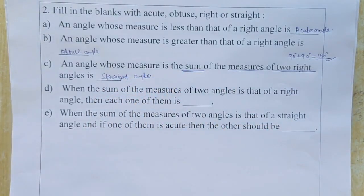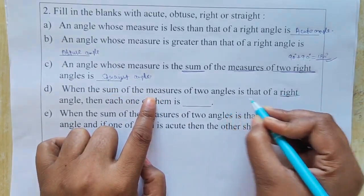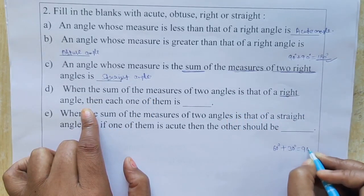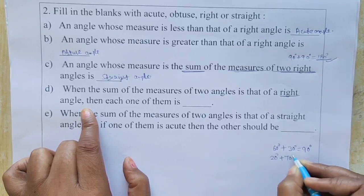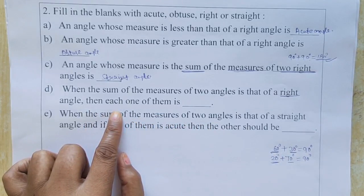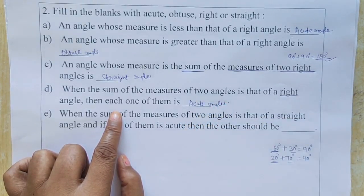Part D — when the sum of the measures of two angles equals that of a right angle, each one of them is... Take two angles whose sum is 90 degrees — for example, 60° + 30° = 90°, or 20° + 70° = 90°. Each of these individual angles is less than 90°, so they are acute angles.